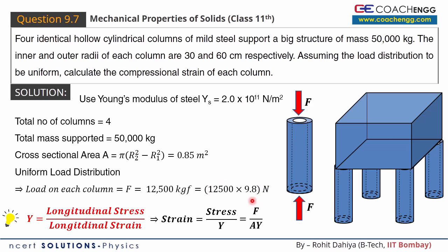Now all we have to do is substitute the values: F = 12,500 × 9.8; cross-sectional area A = 0.85 m²; and Young's modulus Y = 2 × 10¹¹ N/m². Substituting all these values gives our answer as 7.2 × 10⁻⁷. Strain has no unit since it is a ratio — change in length upon length — so the quantities above and below cancel, making it dimensionless.